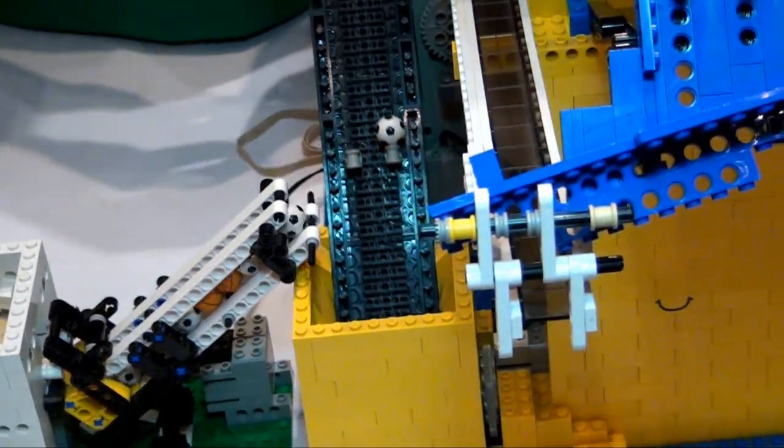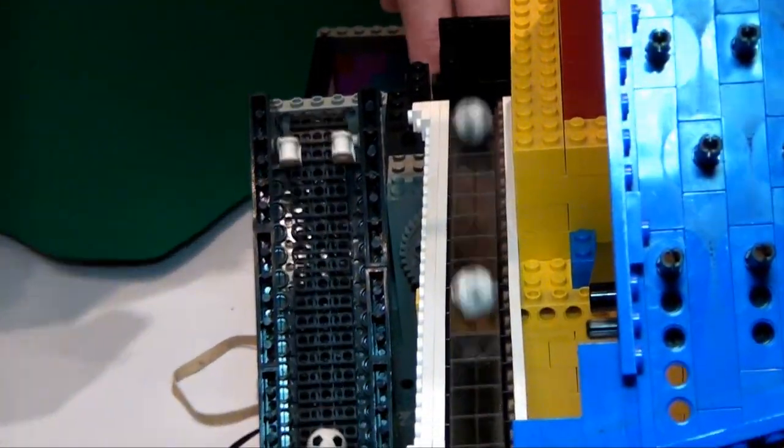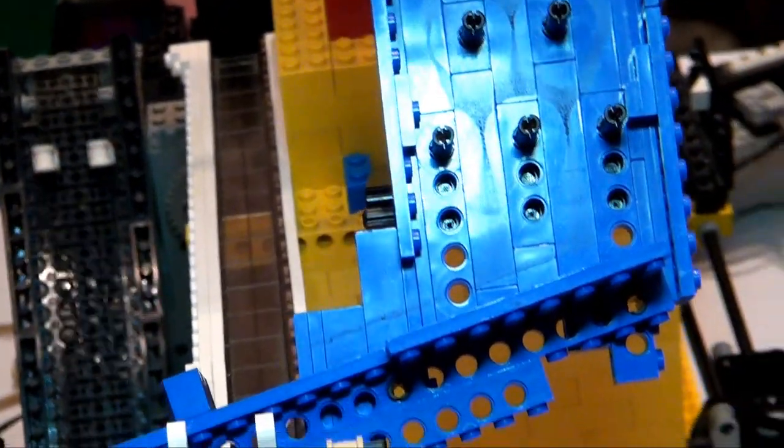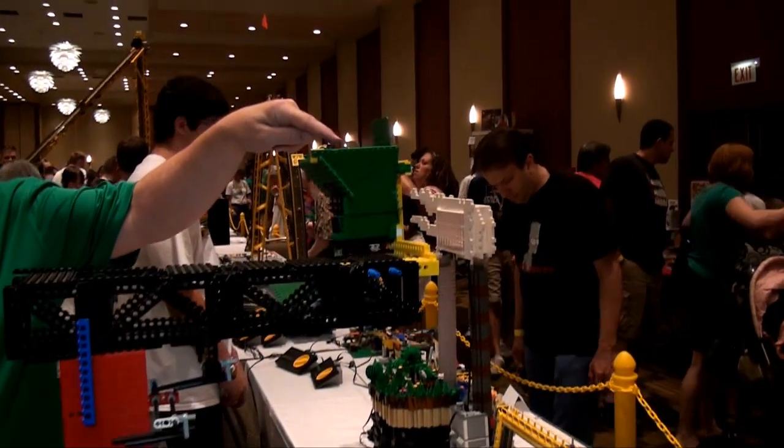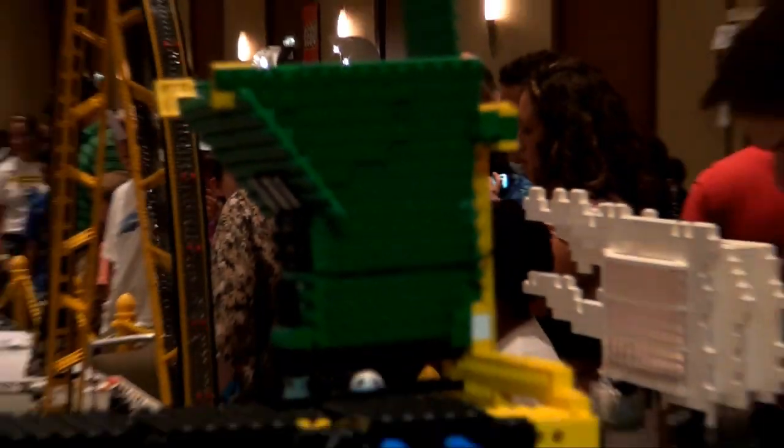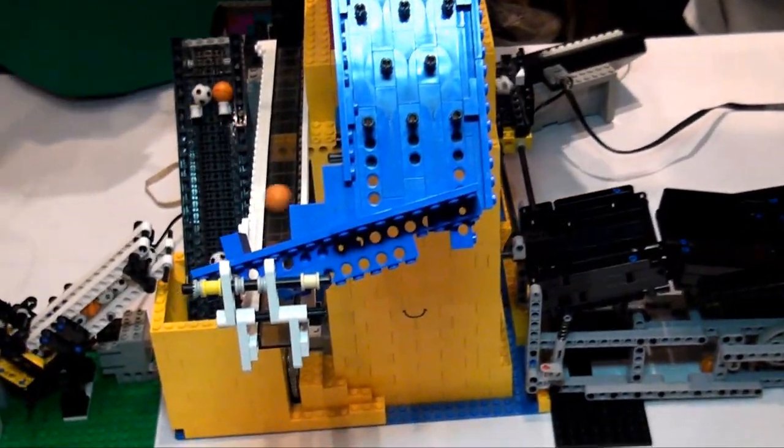The next module has a conveyor which drops it into a ball shooter, which shoots the balls out the back here. The mechanism had to be built really strong and it shoots them most of the time into here and they follow a complicated path down the Plinko and around the back and on to the next module.